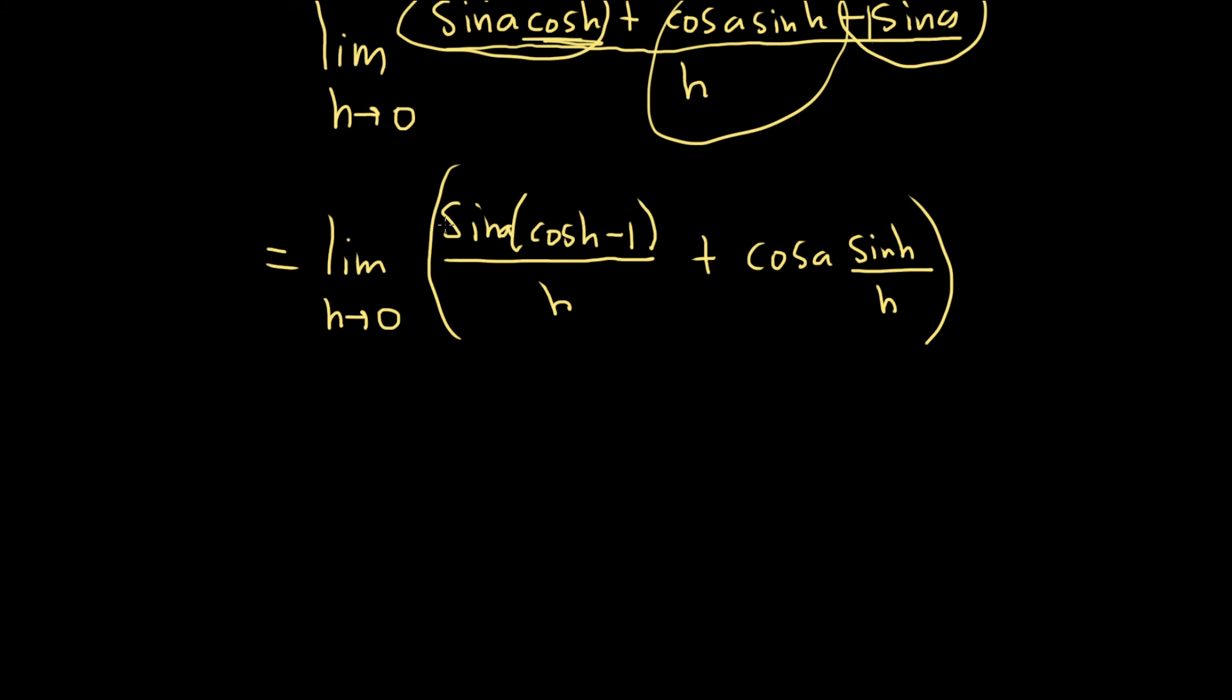And these are special limits. This limit here is equal to 0, it's a special limit from calculus. So this is sine of a times 0 plus cosine a. And this limit here is equal to 1, it's a special limit from calculus. So times 1. So we just get the cosine of a.